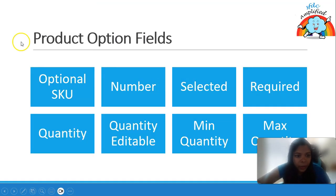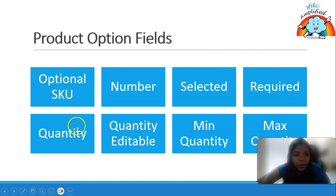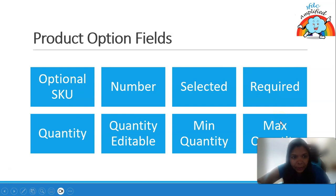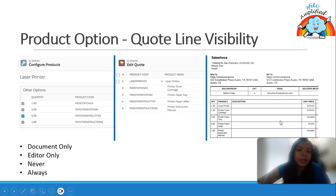So we've covered the following important fields: optional SKU, number, selected, required, quantity, quantity editable, min quantity, and max quantity. We also have something called quote line visibility.